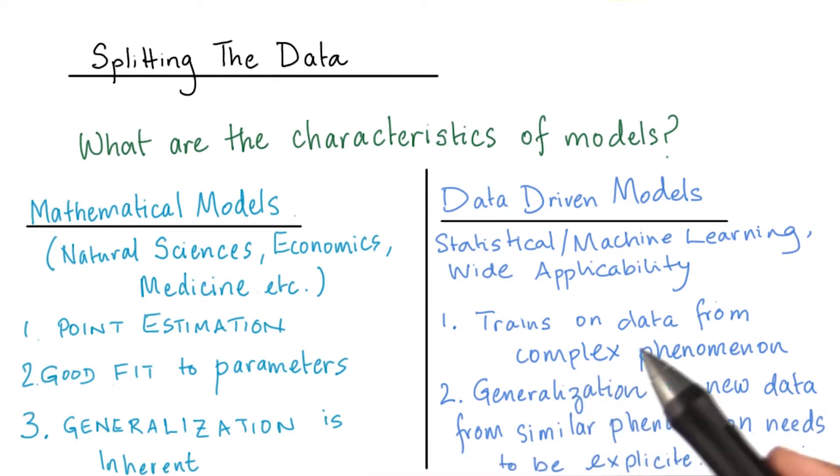In this case, we train on data from a very complex phenomenon, and the generalization to new data from similar phenomenon needs to be explicit.